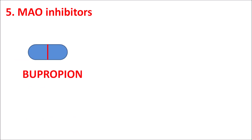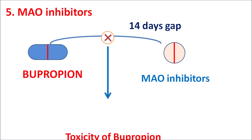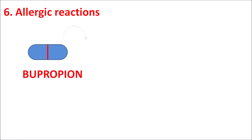The fifth concern is MAO inhibitors. Bupropion is contraindicated with MAO inhibitors — at least a 14-day gap should be maintained between the use of MAO inhibitors and bupropion. In the presence of MAO inhibitors, the action of bupropion is increased, resulting in increased toxicity.